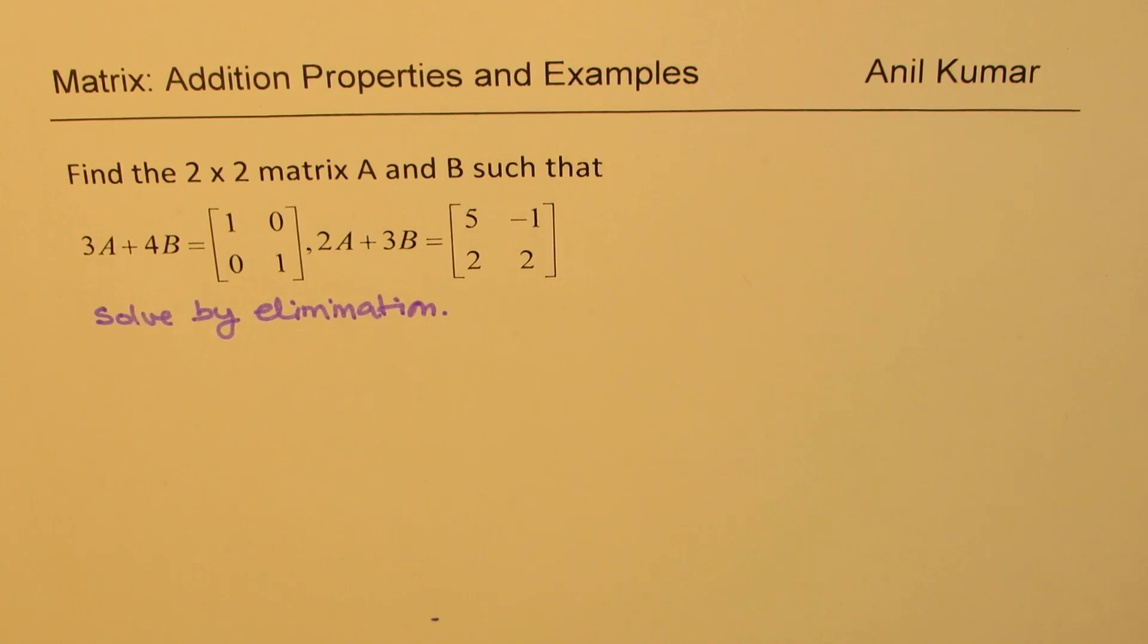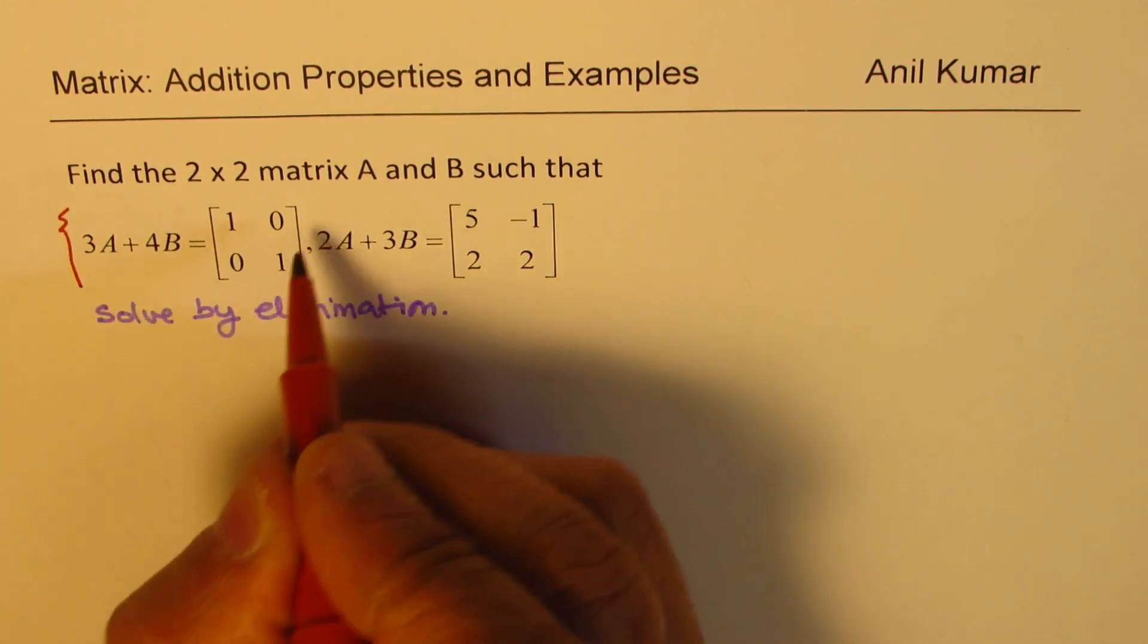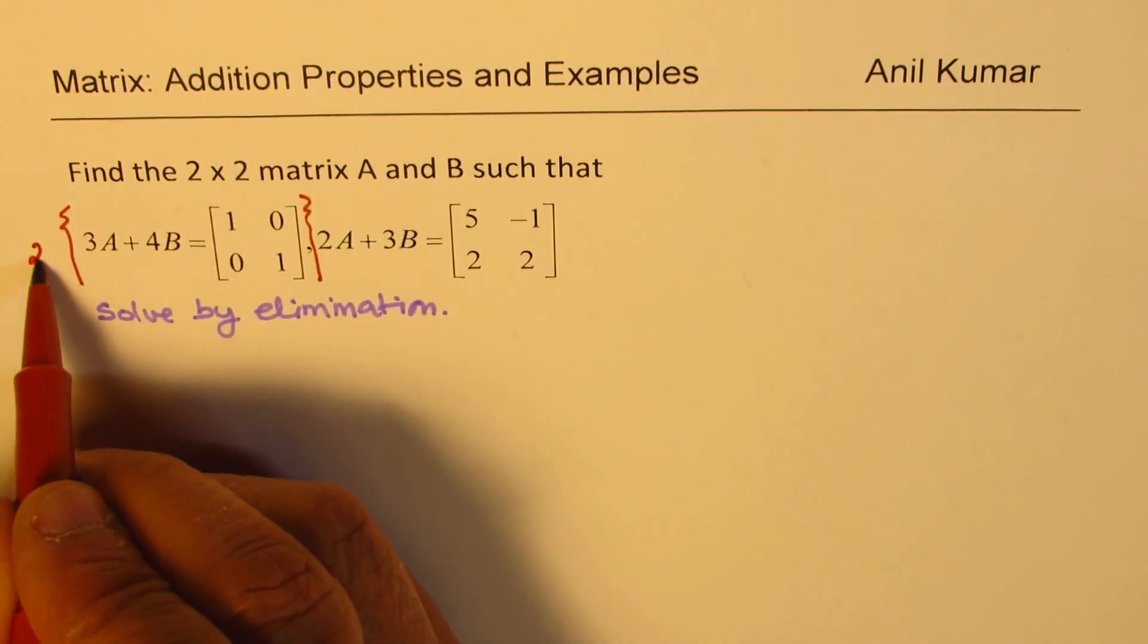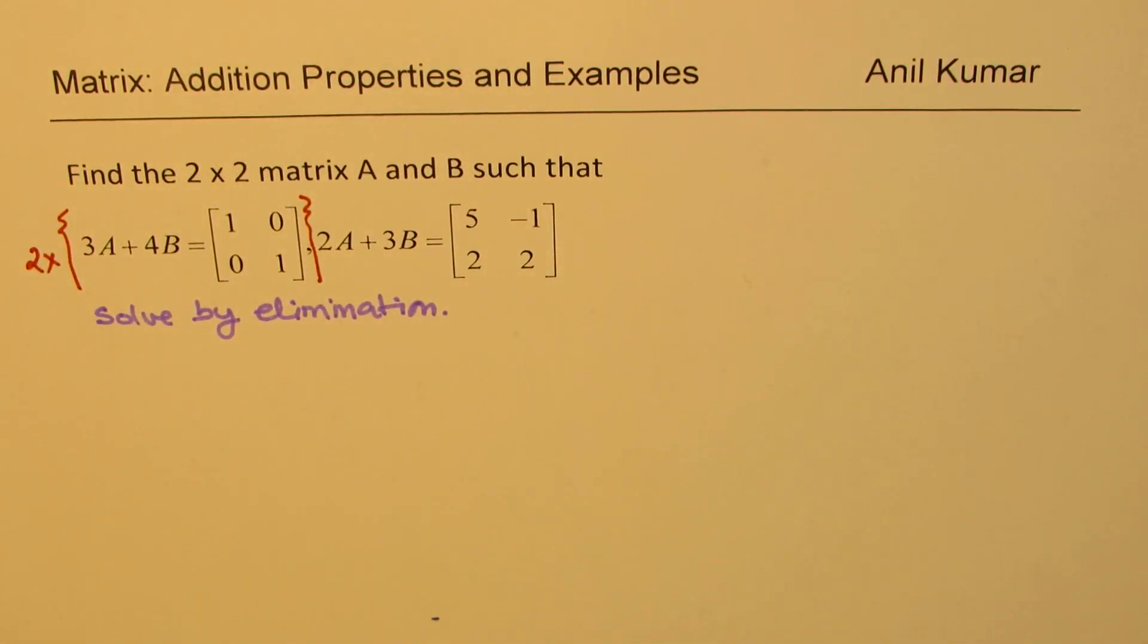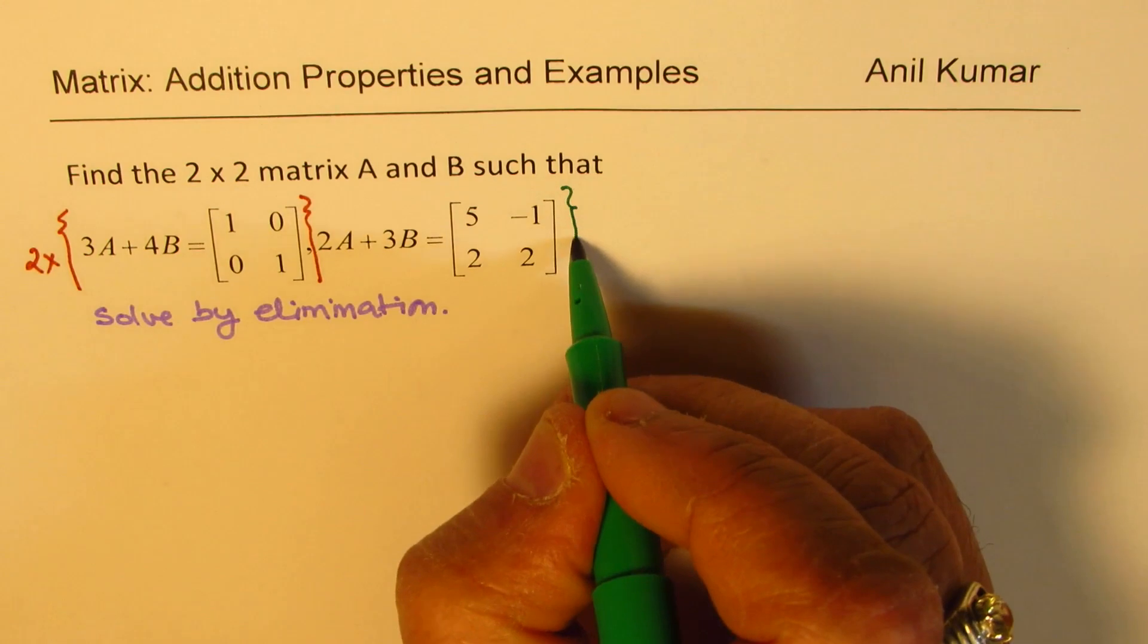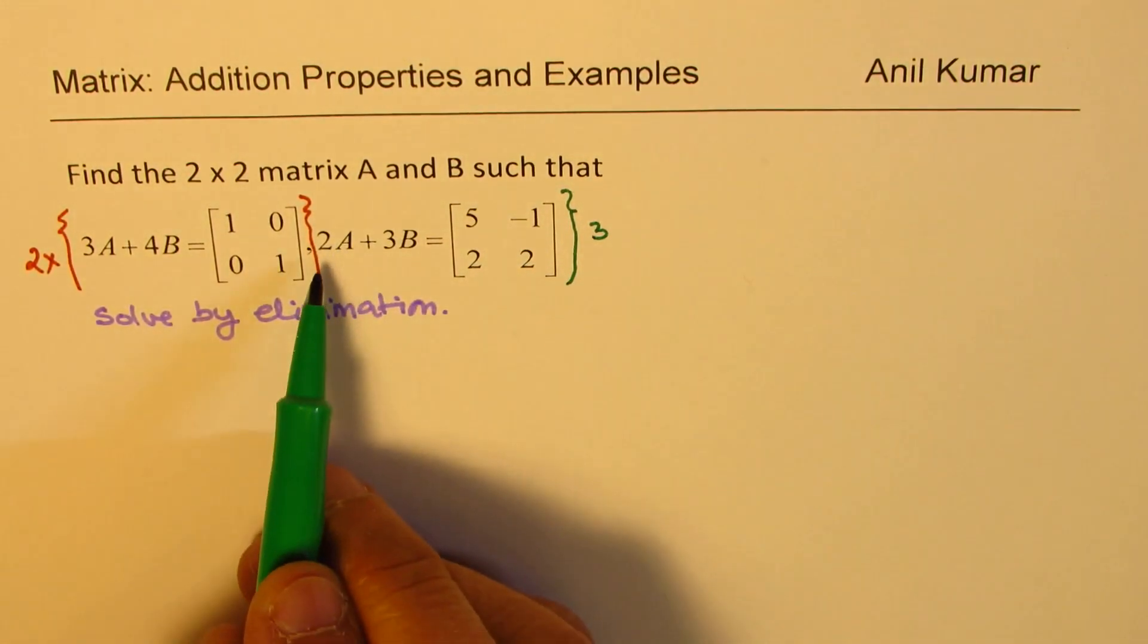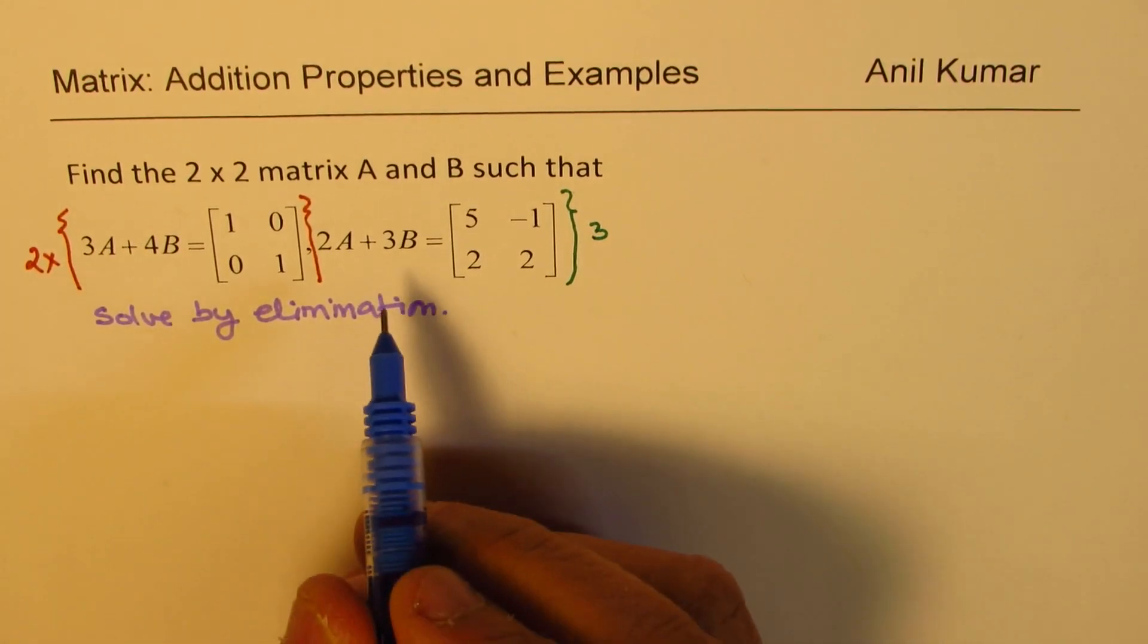Now for doing that, what am I going to do? I'm going to multiply the first set of the information right here by 2, and the other set by 3. So when I do that I get 6A, correct? And then we will take away and find the solution.